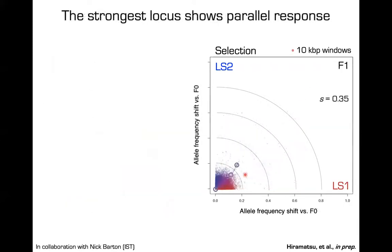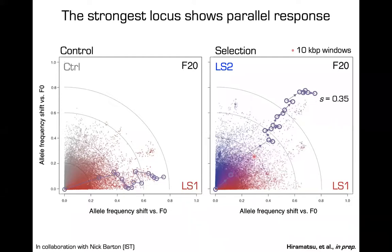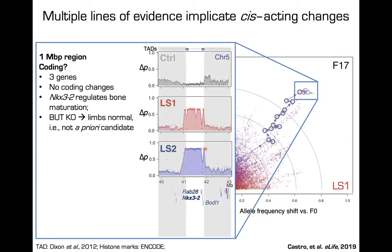Let's take a close look at one of the strongest-responding loci in the genome and see how it changes over 20 generations. This particular window moves quite fast — gradually over 20 generations showing a difference in estimated selection coefficient of 0.35, which is extremely high. There's practically no change in the control line. Digging into this one megabase region, we see a very strong shift in allele frequency. Looking at the genetic neighborhood, focusing on the TAD, we see about three genes. There are no coding changes, and NKS3.2 itself is a known negative regulator of bone maturation.